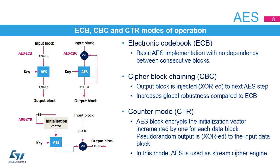As for DES operations, Electronic Codebook, or ECB, and Cipher Block Chaining, or CBC, are supported. ECB can be used safely for small messages only, a few blocks. In CBC mode, the output of the first operation is injected at the input of the next block operation, as described in the diagram. For the first round, an initialization vector is required.